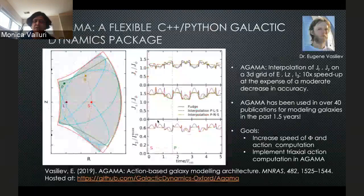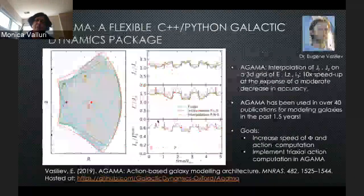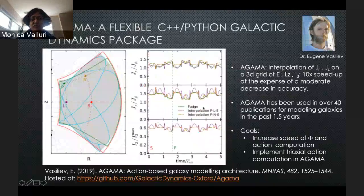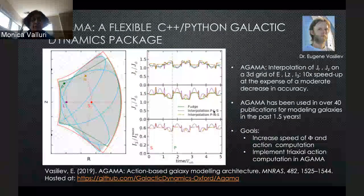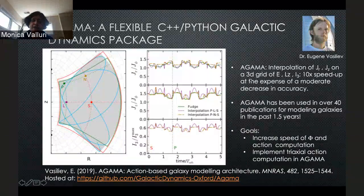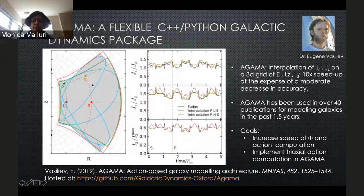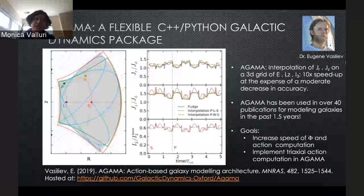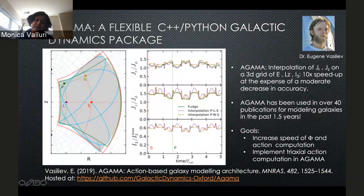Although Binney's method works well, it's not extremely efficient for general potentials. My collaborator Eugene Vasilyev, a postdoc currently at Cambridge, developed a flexible package called Agama, which computes actions in general potentials for much thicker orbits. It is 10 times faster than the Stackel fudge. It does fail in some places, but it has been remarkably powerful — illustrated by the fact that Agama has been used in over 40 publications in the last year and a half.